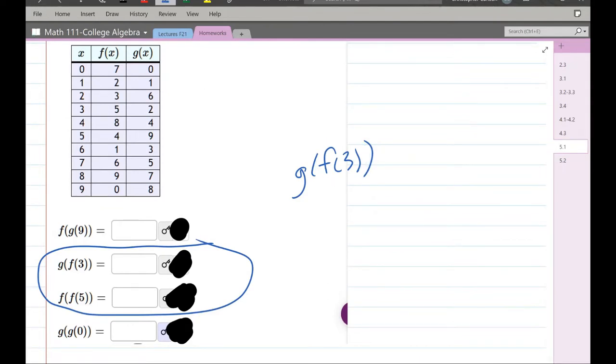First, we're going to take 3 and f it. What is f of 3? Here's the f column and 3 is the input. When you f it, you get out 5. So that tells you that f of 3 equals 5, and I'm going to swap it in right here.